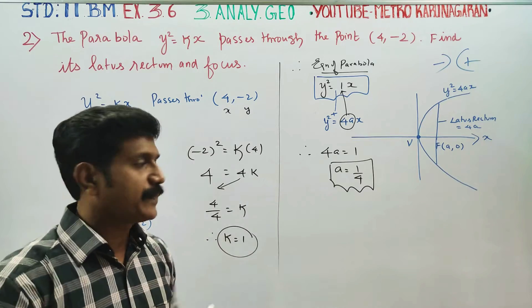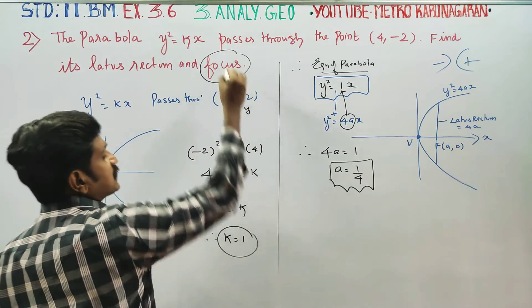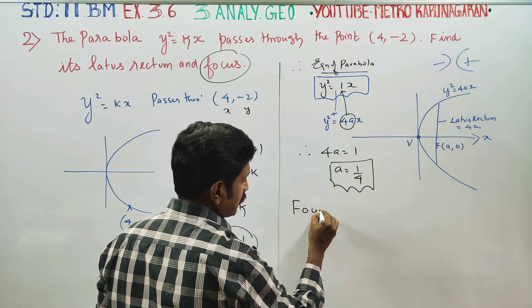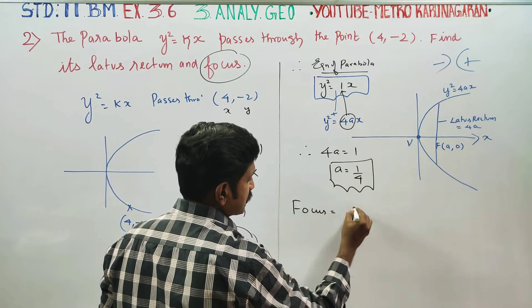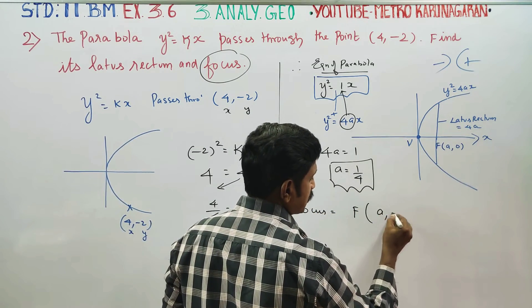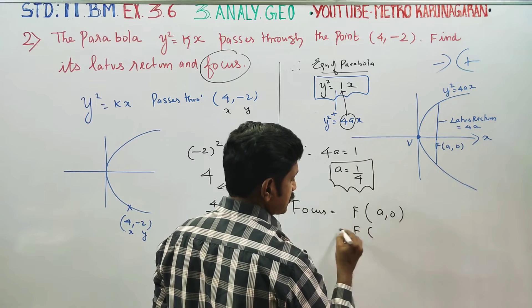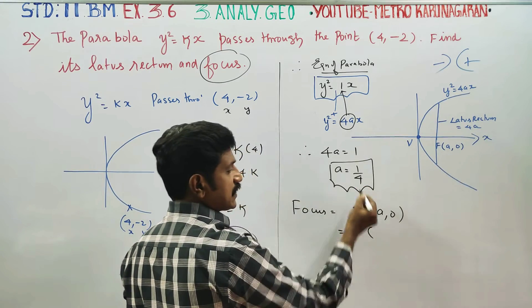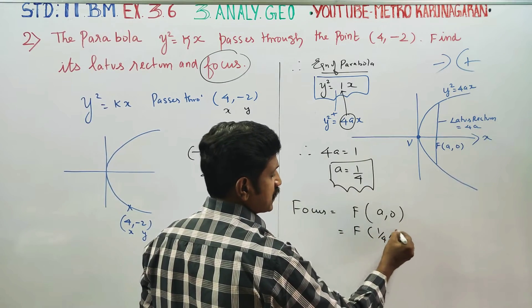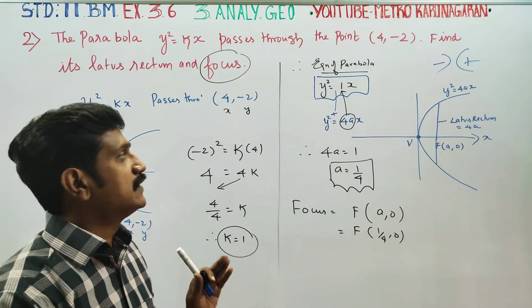First, finding the focus. The focus formula is (a, 0). Substituting a = 1/4, the focus is (1/4, 0).